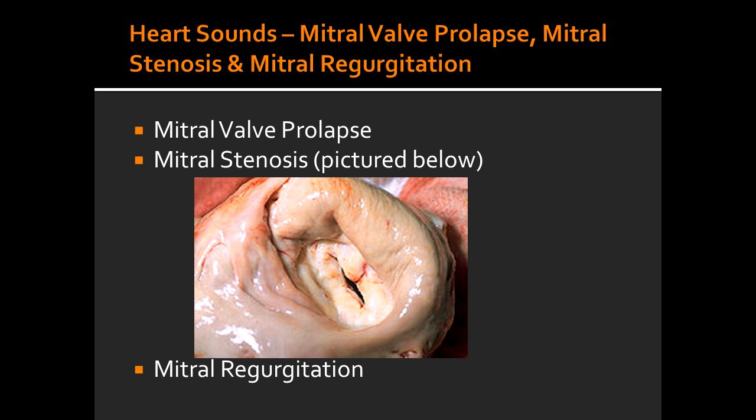In what group of patients will mitral stenosis most commonly occur in? Mitral stenosis most commonly occurs in patients that have suffered from rheumatic heart disease, as well as atrial fibrillation patients. Characteristic sounds of mitral stenosis include a diastolic rumble and an opening snap.